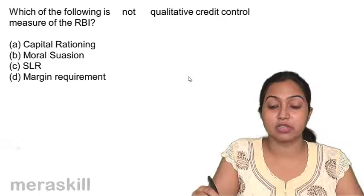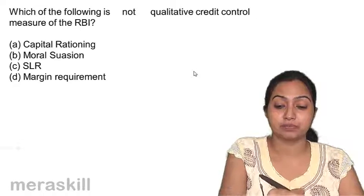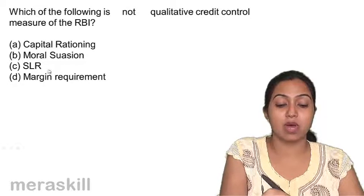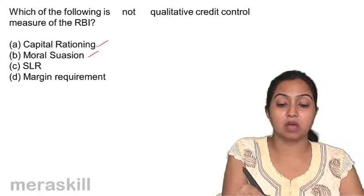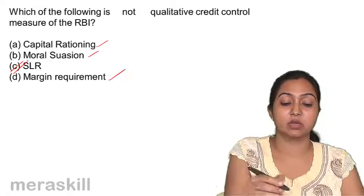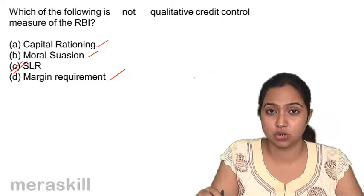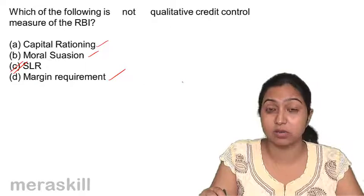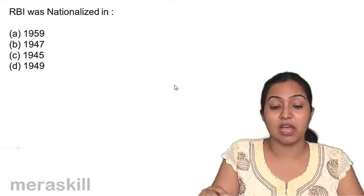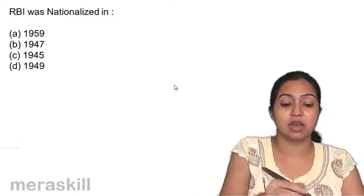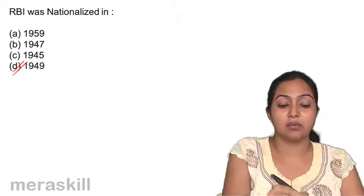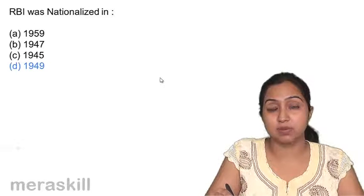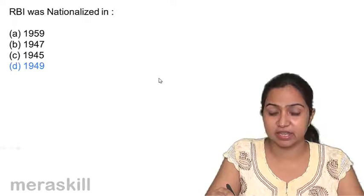Which of the following is not a qualitative credit control? Capital rationing, moral suasion, and margin requirements are all qualitative measures. SLR — statutory liquidity ratio — is quantitative; it is the reserve banks must maintain with themselves out of their total deposits. RBI was nationalized in 1949; commercial banks were nationalized in 1969 and 1980.